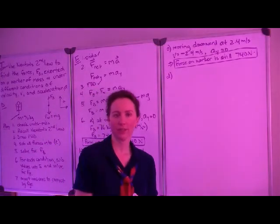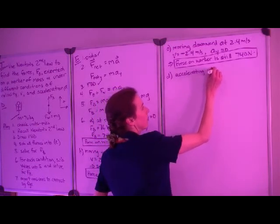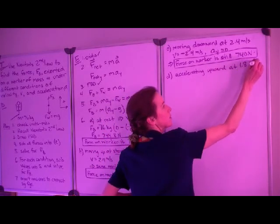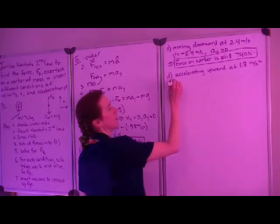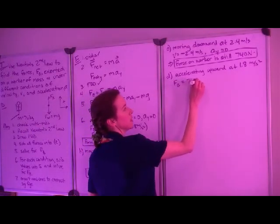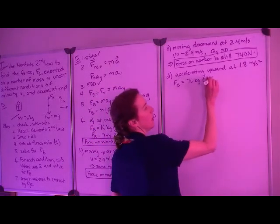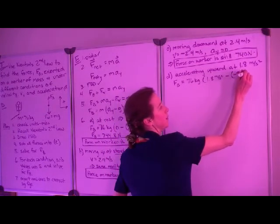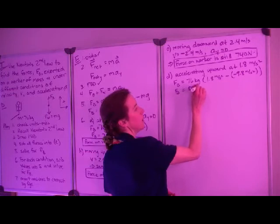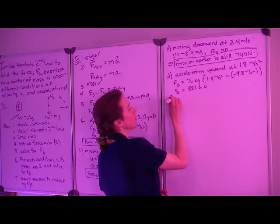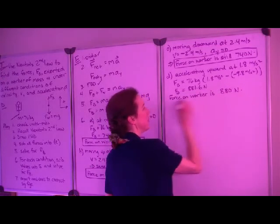Now in part D, we have a non-zero acceleration. We are told that the bucket is accelerating upward at 1.8 meters per second squared. We revisit our general expression: F_B equals the mass of the worker — 76 kilograms — times the acceleration in the Y direction. Since it's accelerating upward, that's positive. So we have 1.8 meters per second squared minus negative 9.8 meters per second squared. When we calculate this, we find that the force of the bucket on the worker is 881.6 Newtons. We report that the force on the worker is 880 Newtons, to two significant figures.